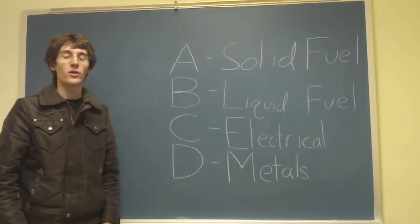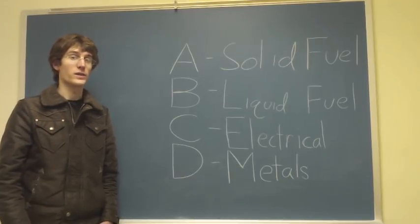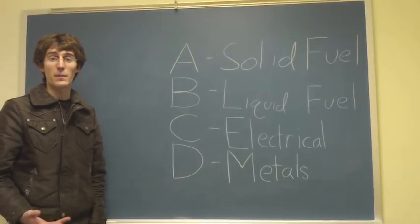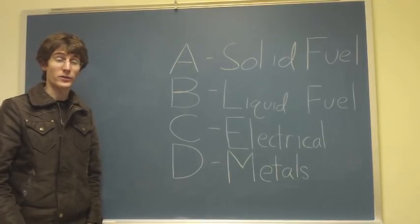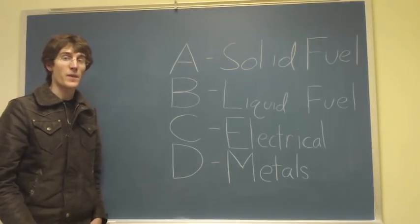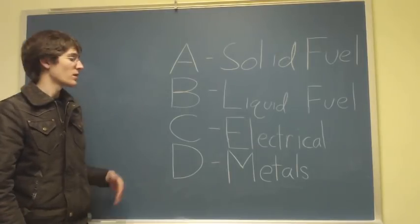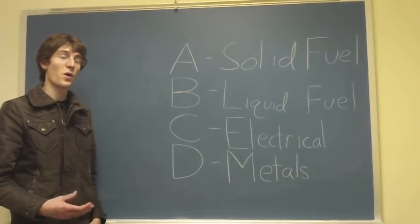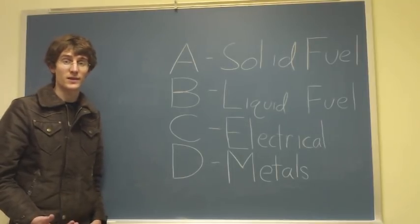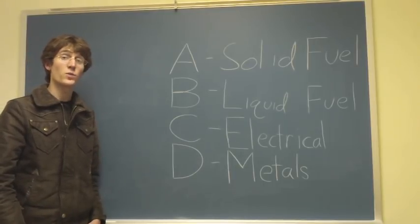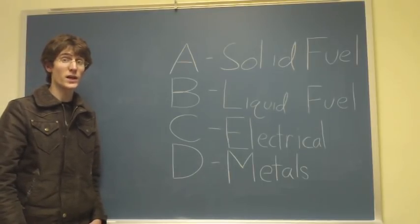The fires we're going to be talking about are divided into four categories. Class A fires involve a solid fuel, such as paper or the wood in a house. Class B fires involve a liquid fuel, like grease in a pan or a puddle of gasoline. Class C fires are electrical, started by sparks from electrical outlets. And Class D fires involve metals. Believe it or not, metals will burn, and they burn extremely quickly and extremely hot, which makes them very dangerous.